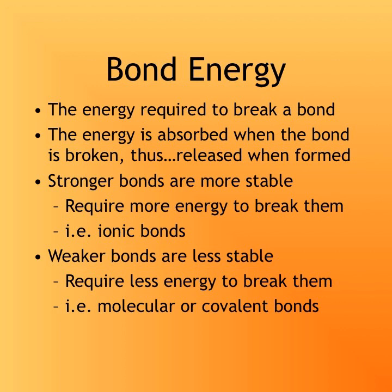The stronger a bond is, the more stable it is, which means it requires more energy to break it. Ionic bonds are stronger than non-ionic bonds. Therefore, weaker bonds that are less stable and require less energy to break are found in molecular compounds. A synonym for molecular compounds is covalent compounds. We're going to focus today on ionic compounds.